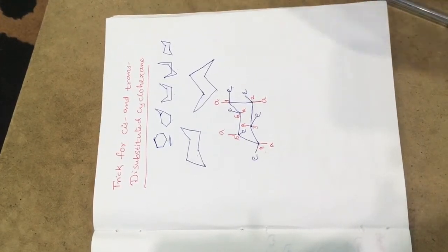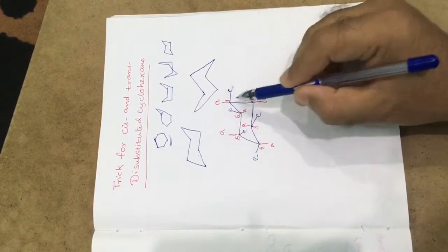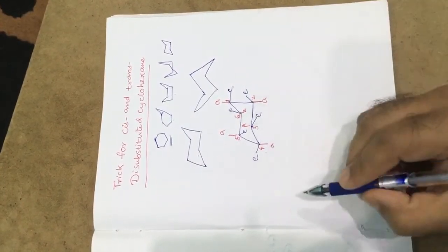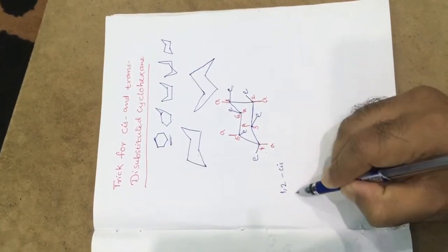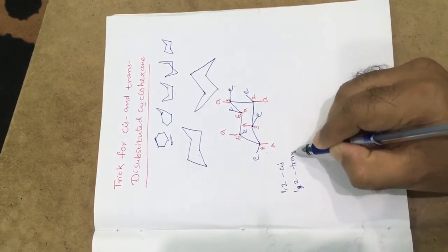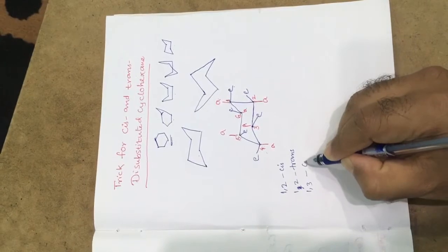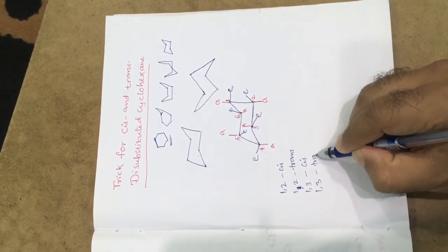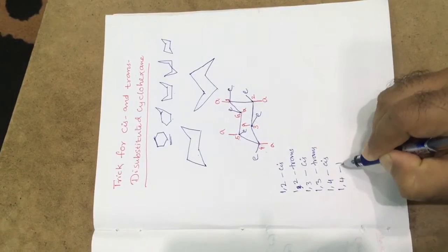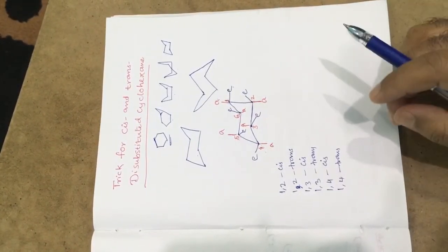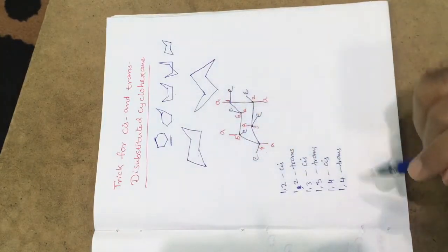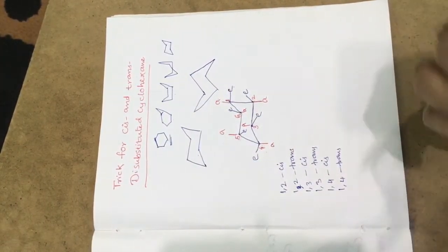Now, how to identify axial and equatorial positions for cis and trans isomers. The possibilities are: 1,2-cis; 1,2-trans; 1,3-cis; 1,3-trans; 1,4-cis; and 1,4-trans. Remember: opposite direction is called trans, and same direction is called cis.